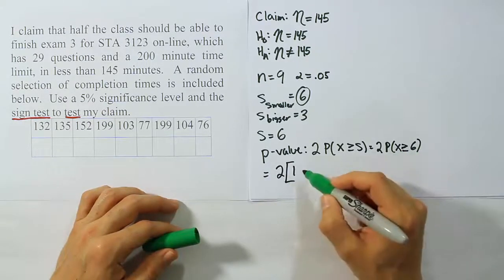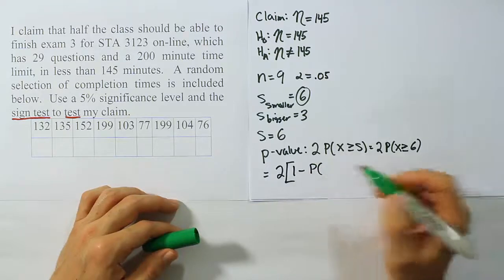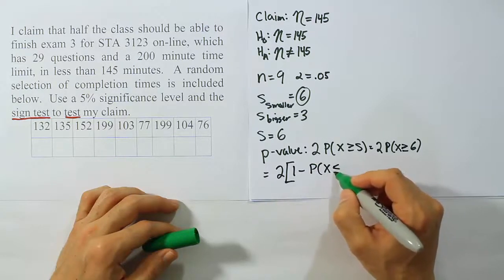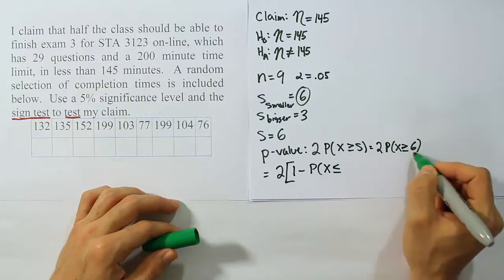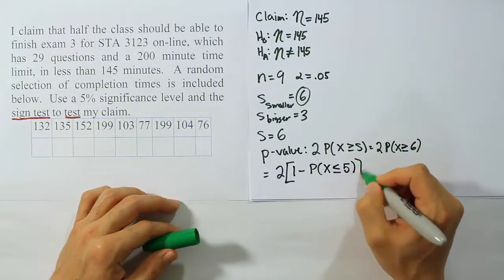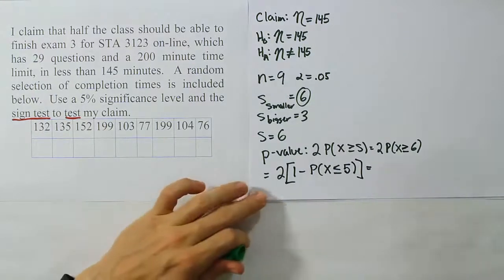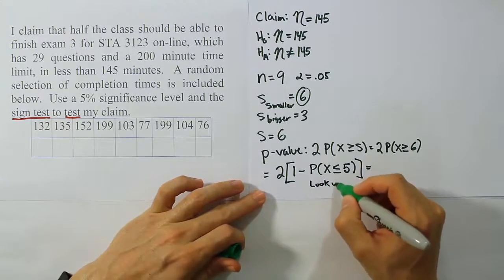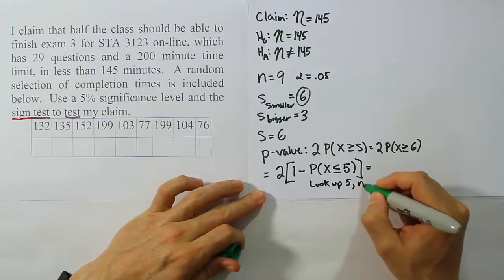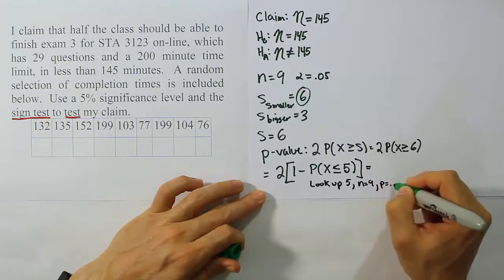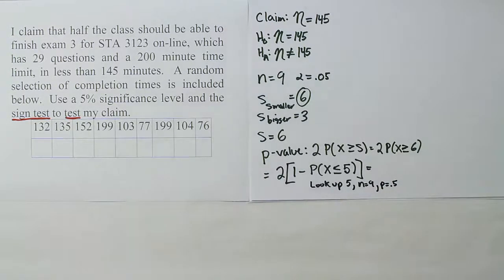The trick to doing that is to do 2 times, and then what we do is 1 minus the probability that x is less than or equal to one number less than this one. This one is 6. We take 1 away from it, we get 5. And so that's the technique. This is equivalent to what we have to find here. And now we can use the table. So now what we're going to do is go to the table. We're going to look up 5 under n equals 9 and p equals 0.5 on the binomial table.